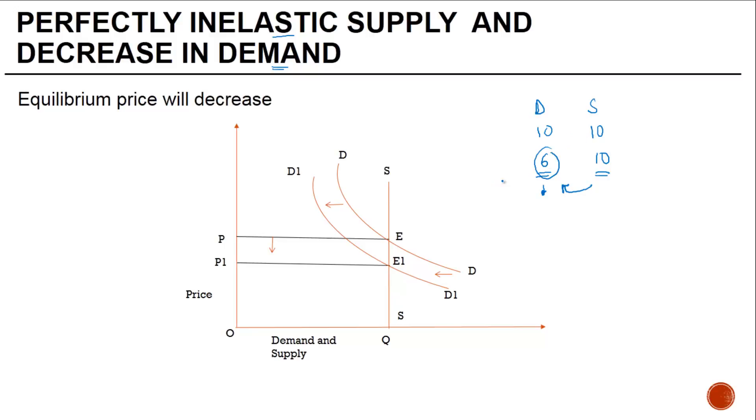That is what we have depicted as part of this graph. The supply curve is again perfectly inelastic, unimpacted by the price which is there. The original demand curve intersects at point E and the price is P. Since the demand decreases, the new demand curve will be on the left side.